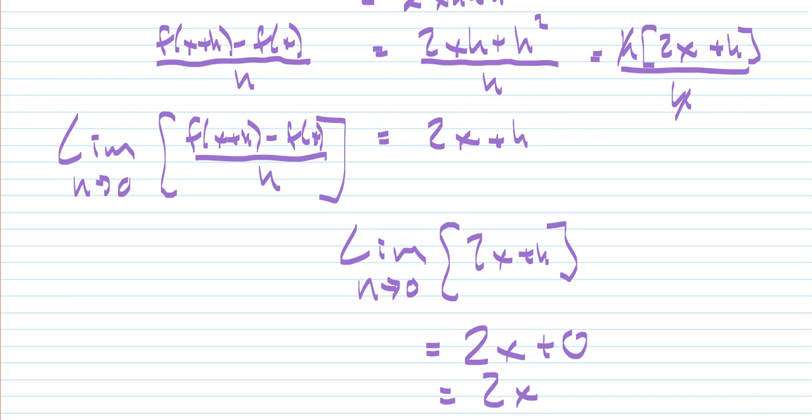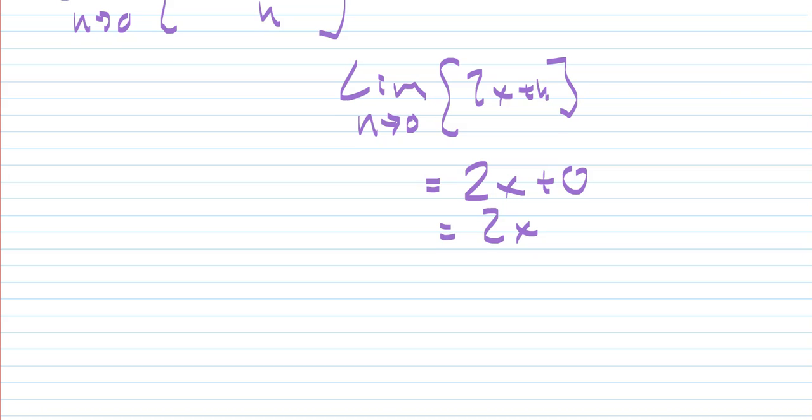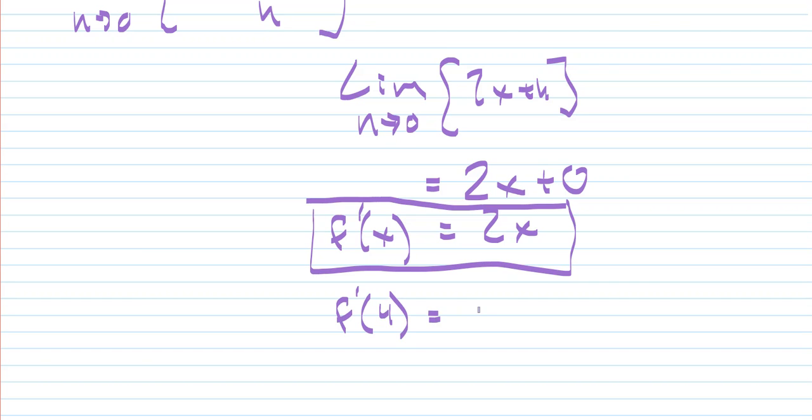So that is our derivative. Our derivative is 2x. All of this is equal to f prime of x. Now, we want to find f prime of 4, I believe it was. So we simply substitute in 4 for x, and we have 8.